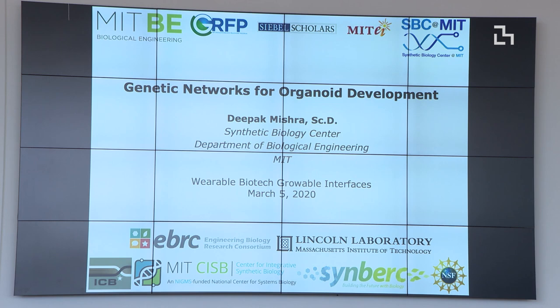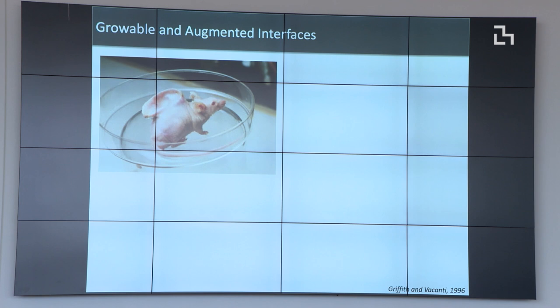About 25 years ago, we saw an ear grown on the back of a mouse from Linda Griffith here at MIT and other researchers in the Boston area. It made you think, wow, we're building tissues — but in actuality it's just some polymer on the back of a mouse that you've squirted some cells on, and you've grown a structure.